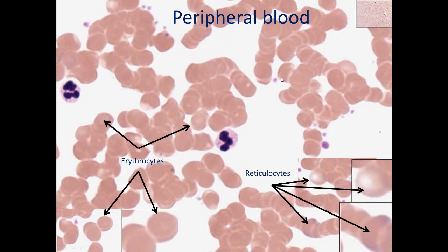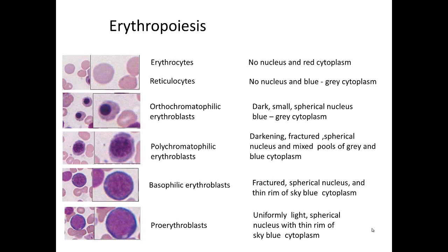Starting with peripheral blood, you see red blood cells, platelets, and white blood cells. You can also see the occasional reticulocyte — an immature red blood cell released from bone marrow that is less than three days old. It has a blue tint to it. In erythropoiesis, the most advanced cell type is the red blood cell itself, which has no nucleus and red cytoplasm.